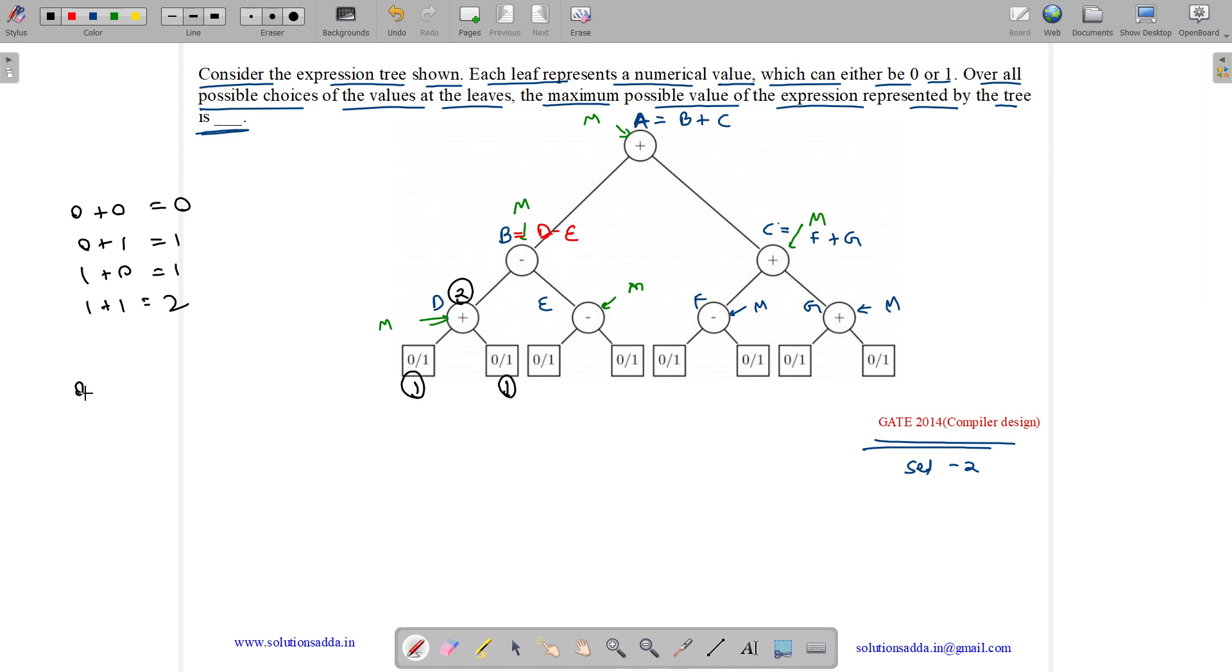Now E. For subtraction we get 0 minus 0, 0 minus 1, 1 minus 0, 1 minus 1. That is 0, negative 1, 1, 0. Minimum value for E is when we take 0 from here and 1 from here. So 0 minus 1 is minus 1.